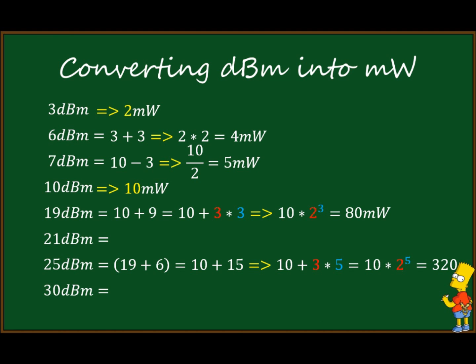For 25 dBm: one approach is 19 + 6, and since 19 dBm = 80 mW, 80 × 4 = 320 mW. But if we don't know 19, it's easier to do 10 + 15, where 15 = 3 × 5, giving 10 × 2⁵ = 10 × 32 = 320 milliwatts.